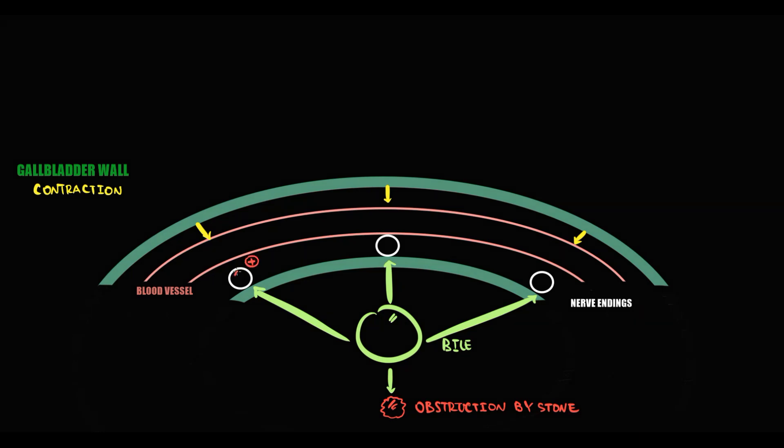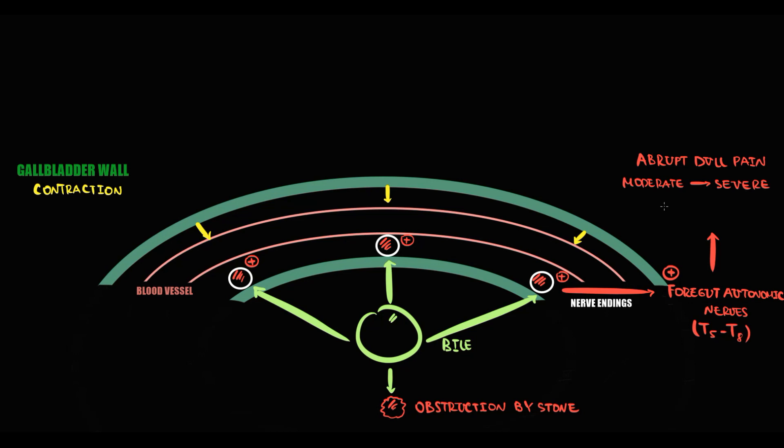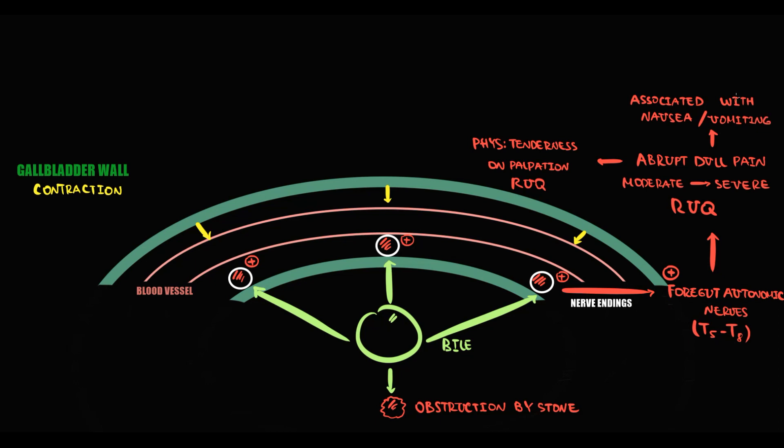Such compression is sensed by nerve endings that carry the signal to visceral autonomic nerves, which in response becomes activated. The activation produces an abrupt onset of dull pain in the abdomen, moderate to severe in intensity. Because gallbladder is localized in the right upper quadrant of the abdomen, typically biliary pain starts in the right upper quadrant. On physical examination with palpation, pain will cause tenderness in the right upper quadrant. Dull pain in the right upper quadrant is typically associated with nausea and vomiting. Such pain pattern we call biliary pain.